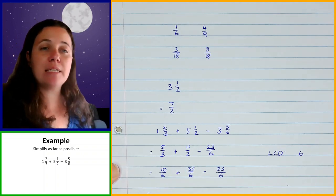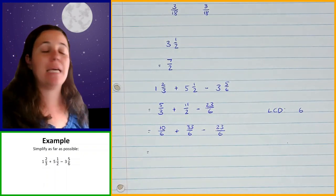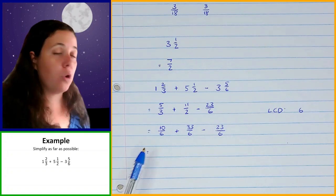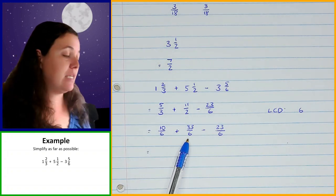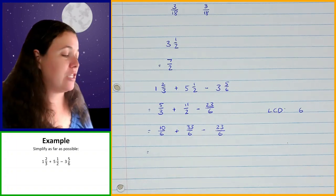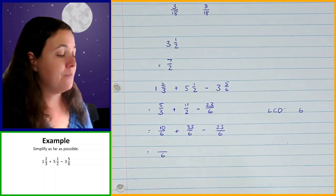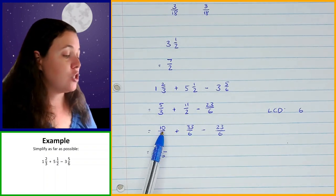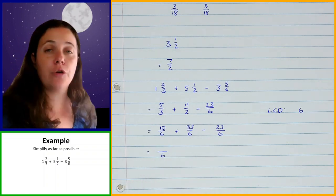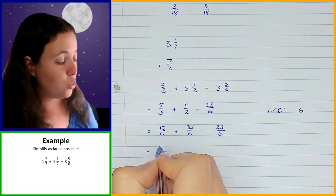Once I've got everything over 6, I can now go and simplify. Now that the denominators are the same, I can just add and subtract my numerators. Please be aware — your denominator is not going to change. What we're doing here is we're saying we have 10 sixths plus 33 sixths minus 23 sixths. How many sixths are we going to be left with? So they're still going to be sixths. I'm going to be adding and subtracting my numerators — so 10 plus 33 minus 23 — and the sixes are going to stay exactly as they are, giving me 20 over 6.